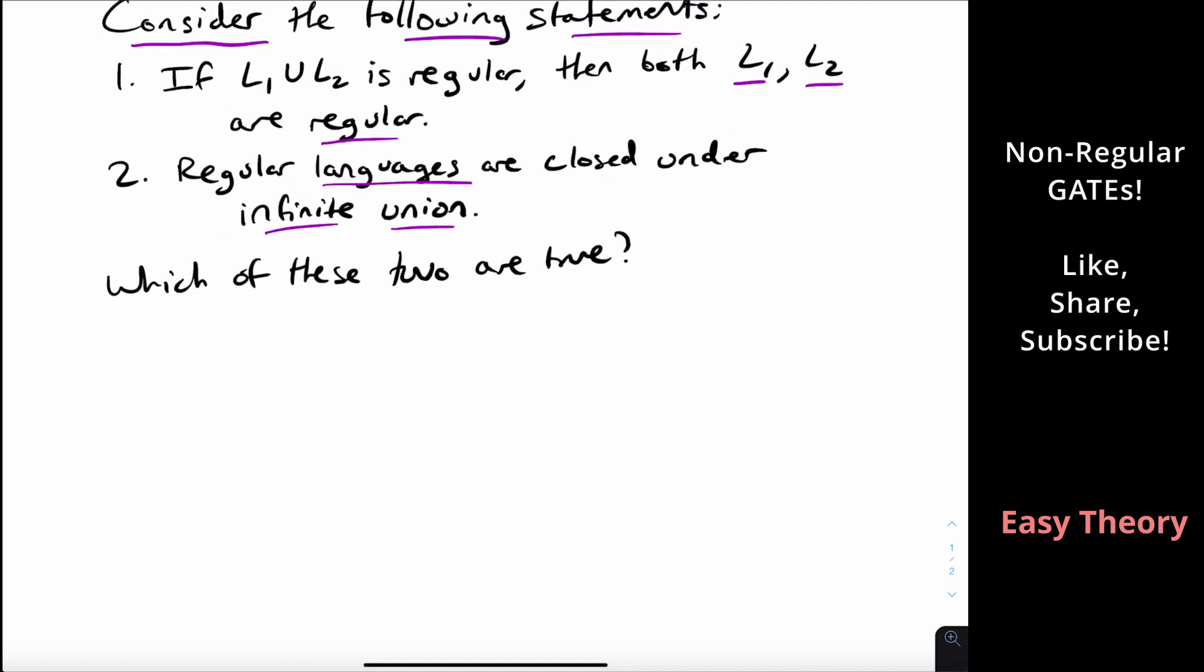So let's look at the second one. This says that if we have languages L1, L2, L3, etc., infinitely many languages, and we take the union of all of them for I equals zero to infinity, then this implies that if all of these are regular, then L is regular too.